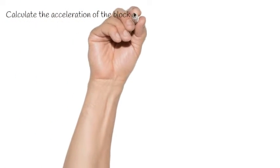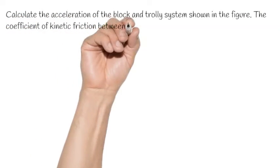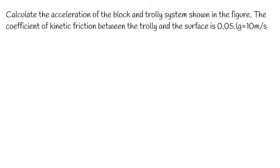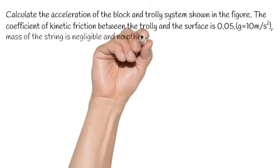Calculate the acceleration of the block and trolley system shown in the figure. The coefficient of kinetic friction between the trolley and the surface is 0.05. The value of gravitational acceleration is 10 meters per second squared.